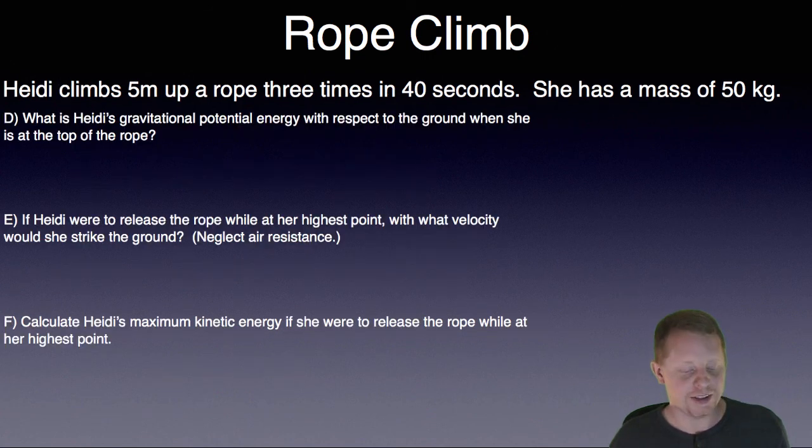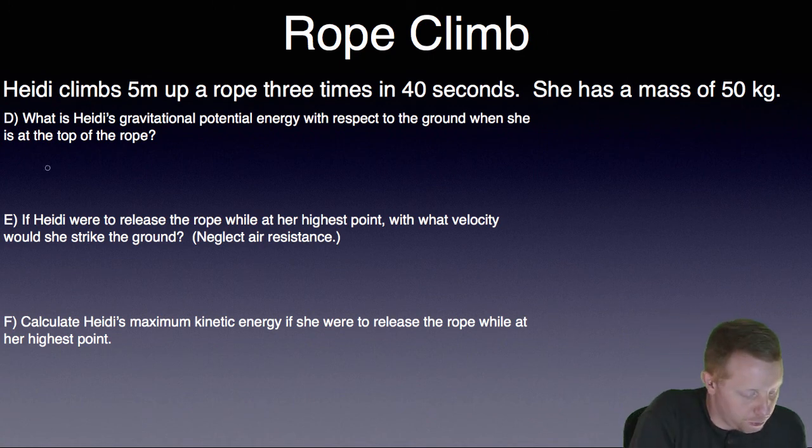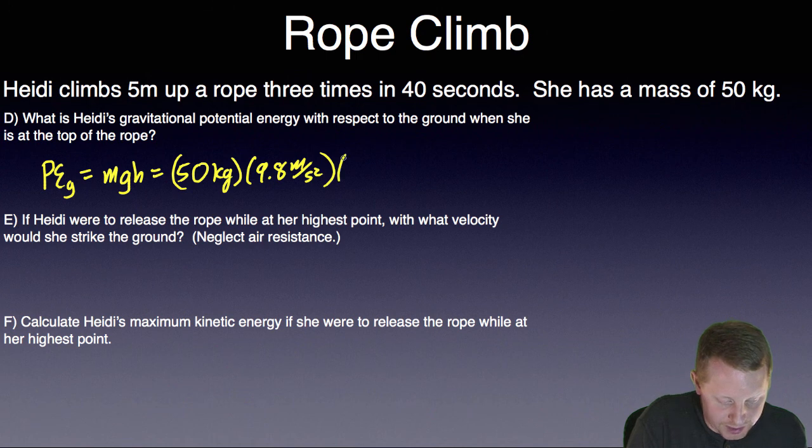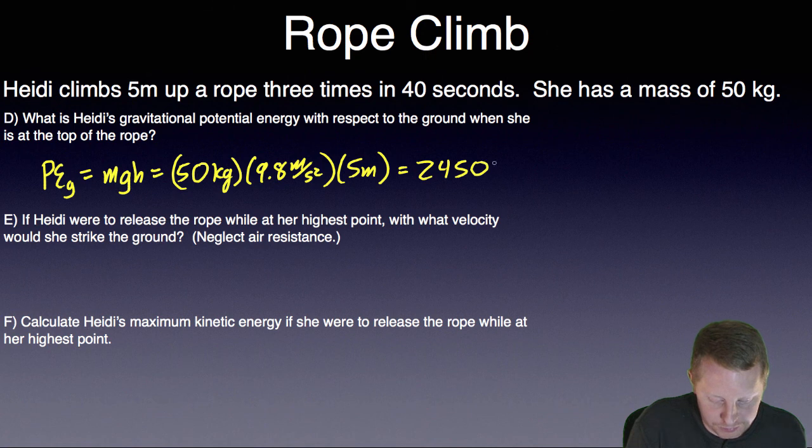What is Heidi's gravitational potential energy with respect to the ground when she is at the top of the rope? Well, if she did 2,450 joules of work to get to the top of the rope, then that must be your gravitational potential energy, which we can prove by calculating it. Potential energy due to gravity at the top of the rope is going to be mgh, where again her mass is 50 kilograms. Her acceleration due to gravity, 9.8 meters per second squared. And the height, 5 meters, gives you 2,450 joules, just as we predicted.